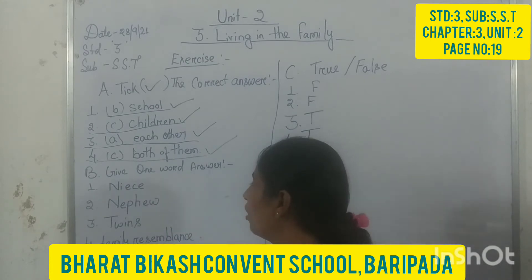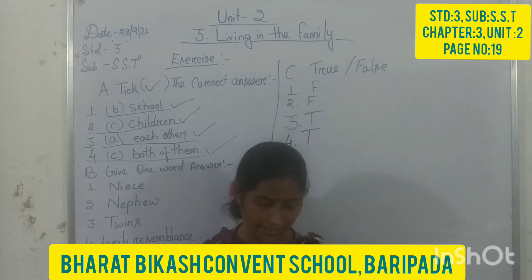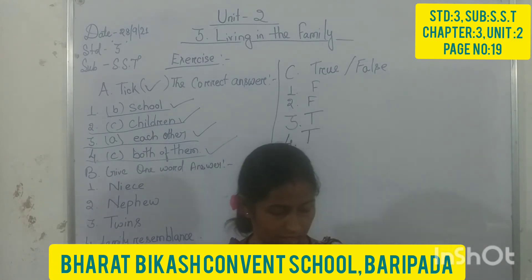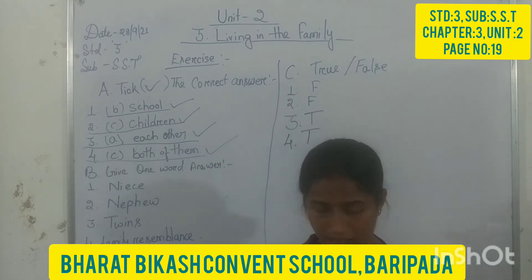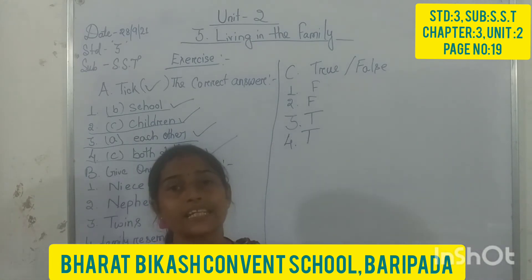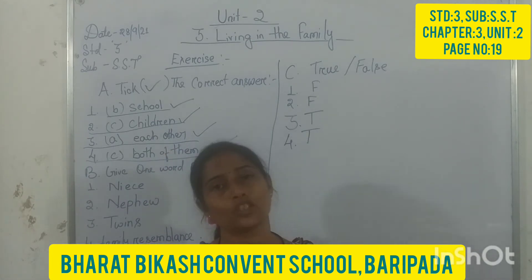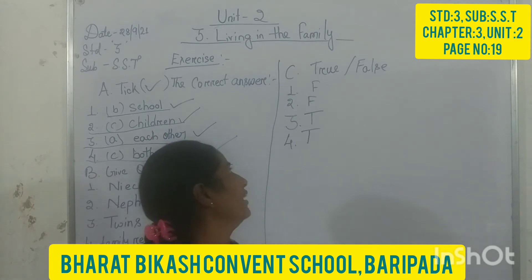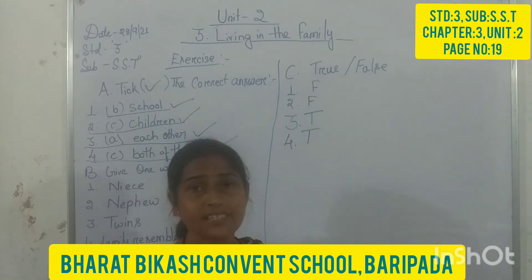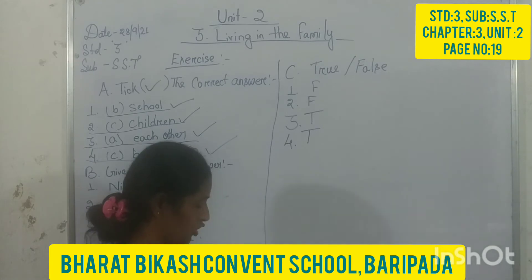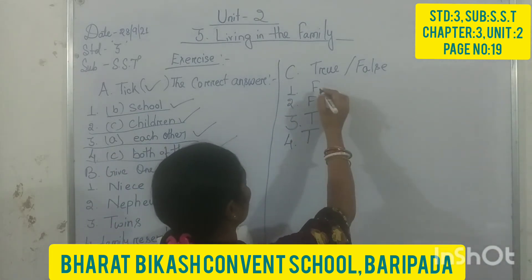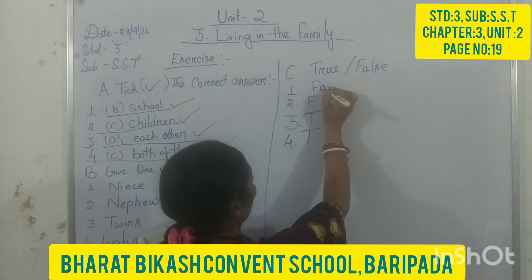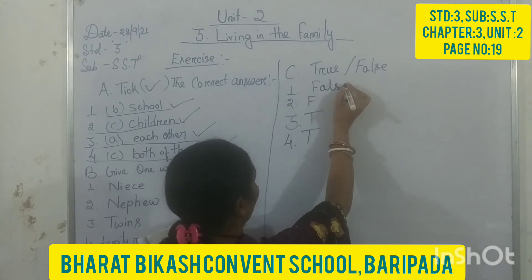Just write down in one word. Next, section C: True or False. You have to read the statement and mention if it is true or false. First statement: children resemble only their parents and not their brothers and sisters. It's false. Some children also resemble their brothers or sisters, so the statement is false. Write F or false.